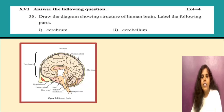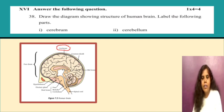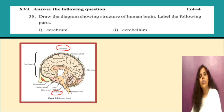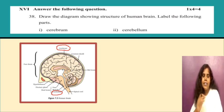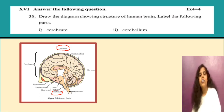Draw the diagram showing the structure of the human brain and label the following parts: cerebrum and cerebellum. Draw the diagram and clearly mention these two parts.